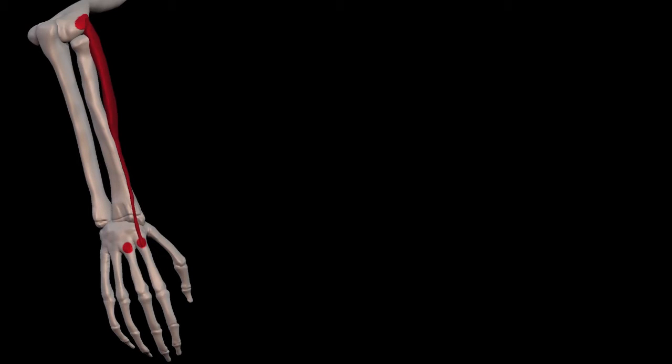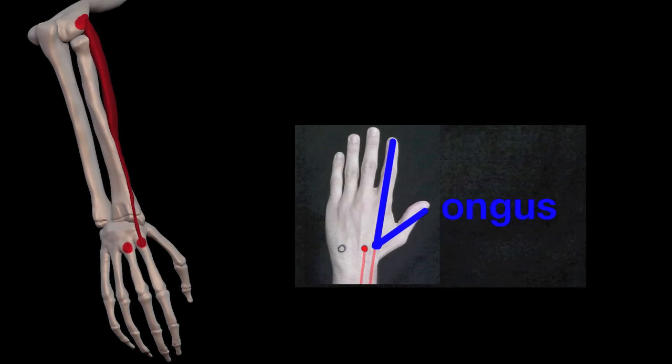This muscle attaches to the base of the first finger. For this one, I trace up the finger and out to the thumb, giving me an L. It works for the left hand and gives a backward L for the right. We use the L to remember longus.